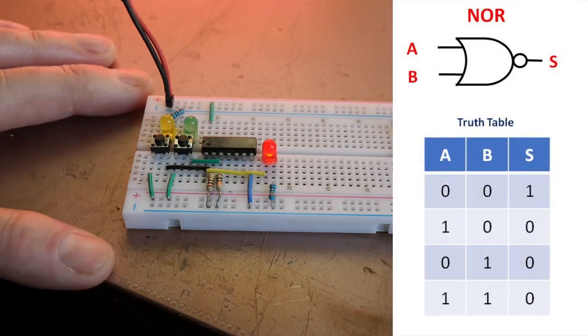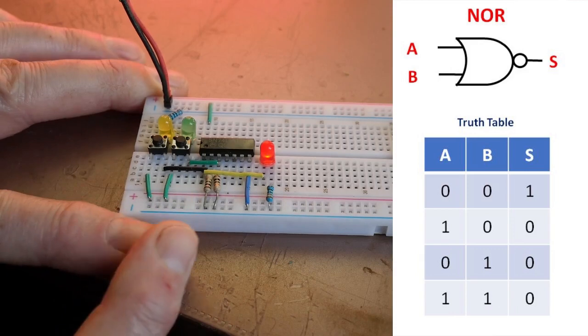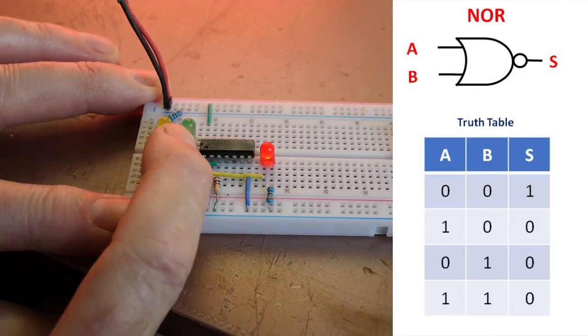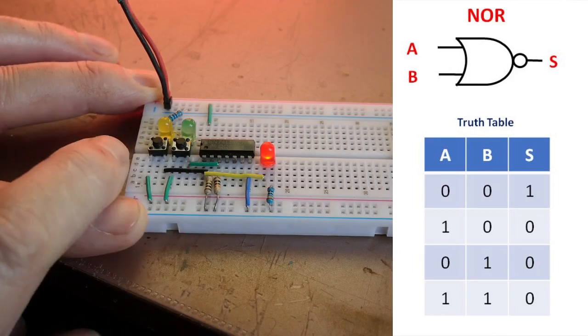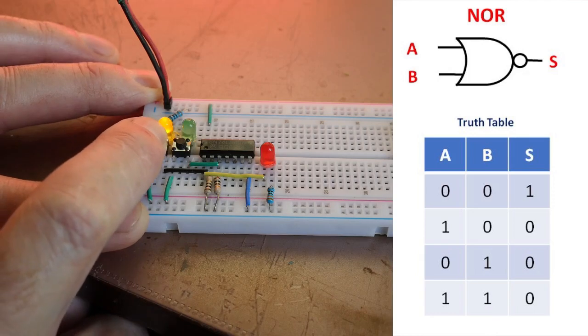Here's the truth table. As you can see, with both inputs low the output is high. With first input low second input high output goes low, and first input high and second input low we get an output that's also low, and then finally both together gives us a low output.